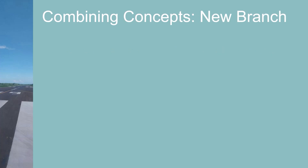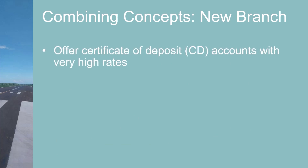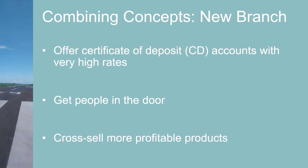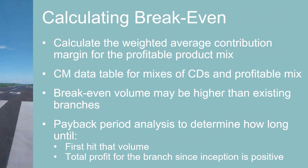I'll combine some concepts we've covered using an example from my banking days, explained conceptually to show practical use without excessive detail. Banks often offer certificate of deposit or CD accounts with very high rates when they open a new branch — a way to get people in the door and cross-sell more profitable products over time. Sometimes the contribution margin on these CDs was negative, and the only way to justify these high rates was to treat them as marketing expenses masquerading as an interest expense. The hope was that branch customers would eventually migrate to a profitable mix of checking, savings, CDs, and other services, and I could calculate the weighted average contribution margin for this mix.